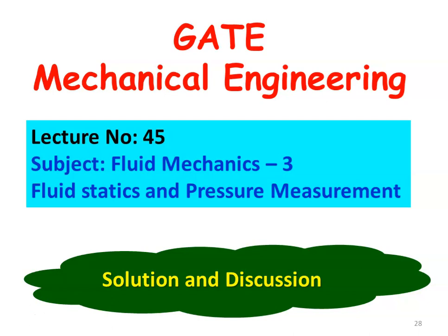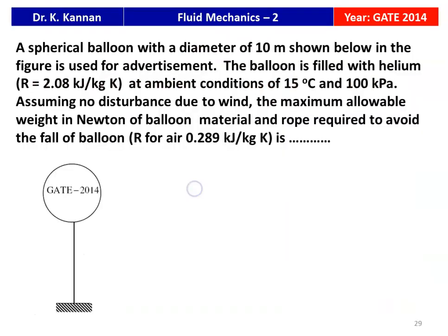We are continuing with the earlier lecture; in the earlier lecture also we solved GATE questions in the topic fluid statics and pressure measurement. This question is from GATE 2014: a spherical balloon with a diameter of 10 meters shown in the figure is used for advertisement. The balloon is filled with helium of gas constant R equal to 2.08 kJ per kilogram Kelvin at ambient conditions of 15 degree Celsius and 100 kilo Pascal. Assuming no disturbance due to wind, find the maximum allowable weight in Newton of balloon material and rope required to avoid the fall of the balloon.